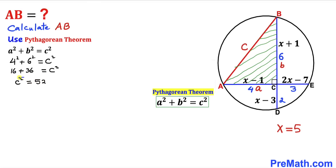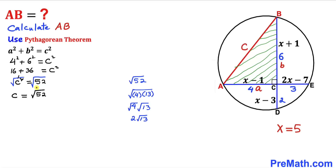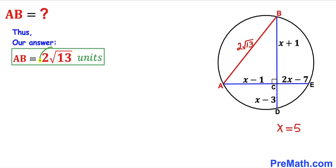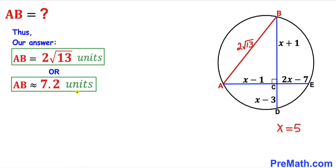Taking the square root of both sides, c equals the square root of 52, which simplifies to 2 times the square root of 13. Therefore this side length, and thus our length AB, turns out to be 2 times the square root of 13 units, which is approximately equal to 7.2 units.